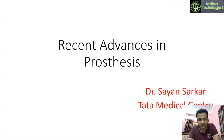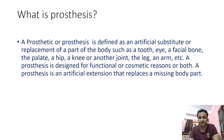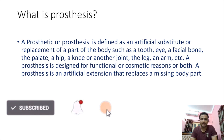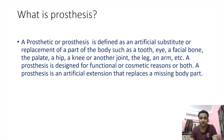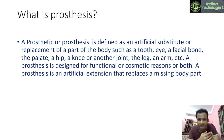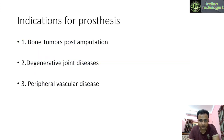To introduce myself, I'm Dr. Shayon from Tata Medical Center, Kolkata. I'm doing my fellowship here. Before we start: what is a prosthesis? A prosthesis is basically defined as an artificial substitute or replacement of a part of the body, such as a tooth, eye, facial bone, hip, knee, or another joint — an artificial extension that replaces a missing body part.